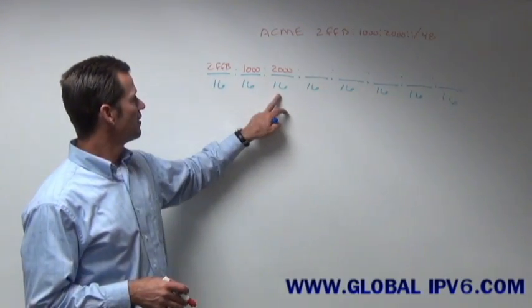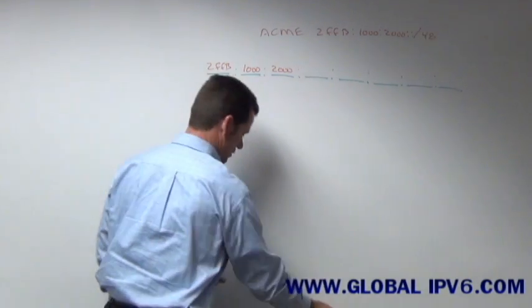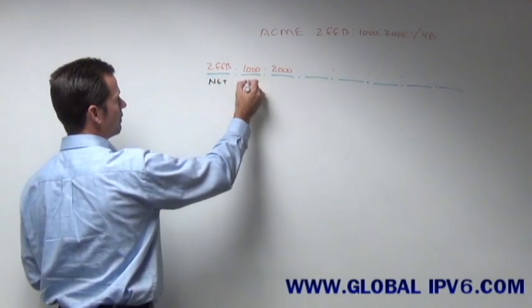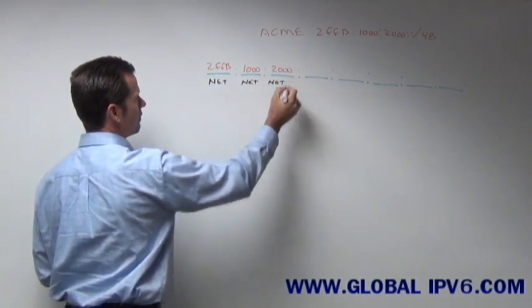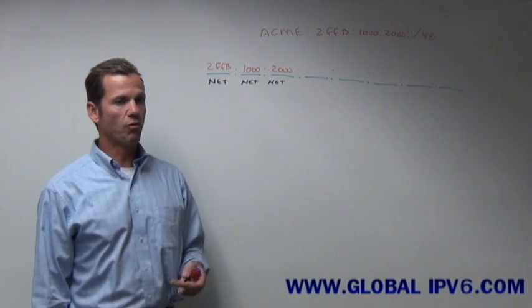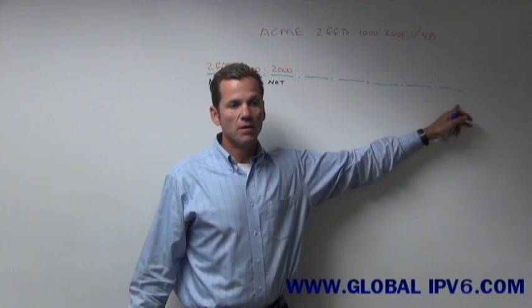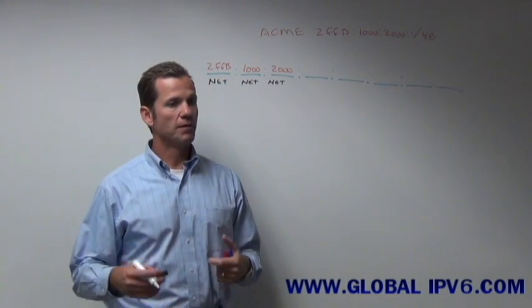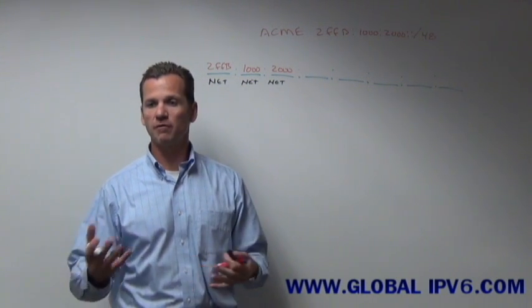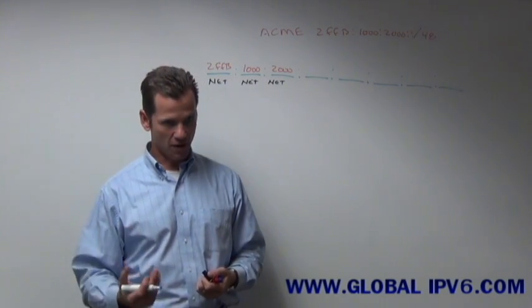So if I was assigned the first 48 bits, we would view the first 48 bits as our network portion, allowing the ACME Corporation to do whatever they want with the last 5 fields. Well, in an IPv6 world, we're going to reserve typically the last 64 bits, especially if you're doing something we call auto-configuration. We're going to reserve the last 64 bits as the host bits.